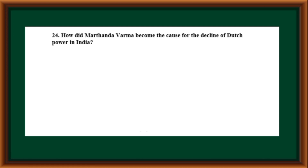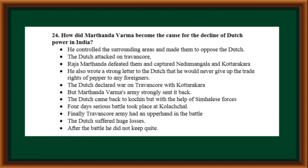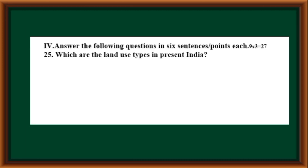How did Marthanda Varma become the cause for the decline of Dutch power in India? Marthanda Varma controlled surrounding areas and made them oppose the Dutch. When the Dutch attacked Travancore, Marthanda Varma defeated them and captured Nedumangala and Kottarakara. He declared he would never give up pepper trade rights to foreigners. The Dutch declared war on Travancore, but Marthanda Varma's army repelled them. The Dutch returned with Sinhalese forces; a four-day battle took place at Kolachal, and Travancore's army had the upper hand. The Dutch suffered huge losses.